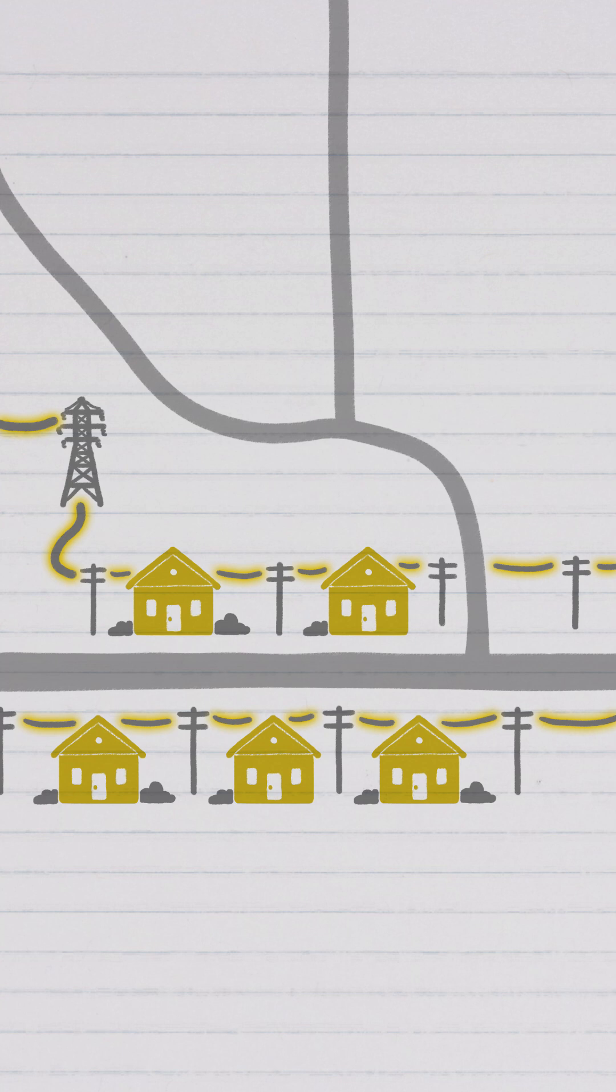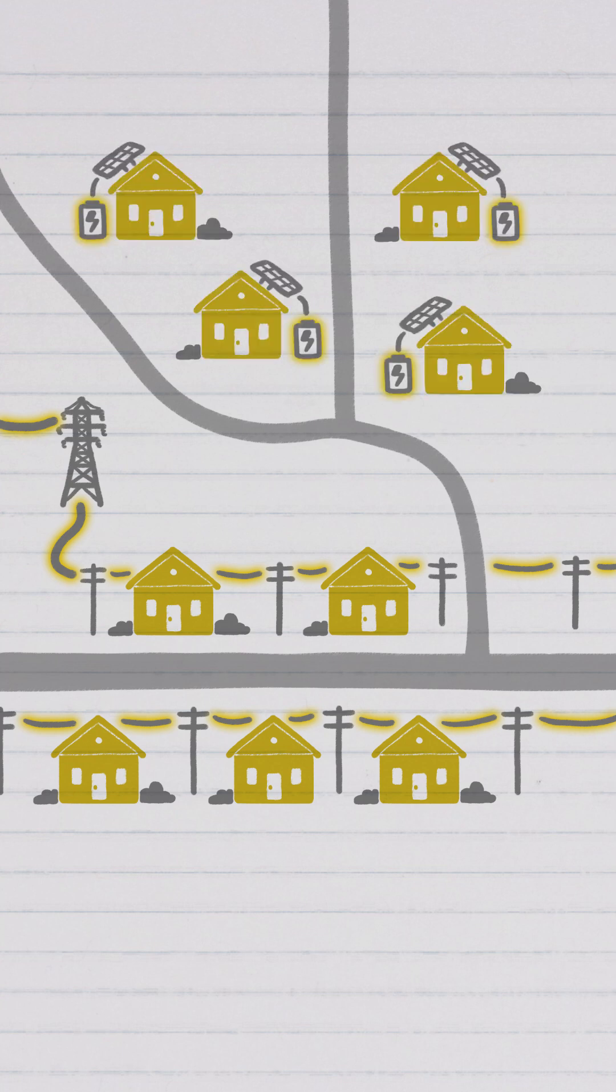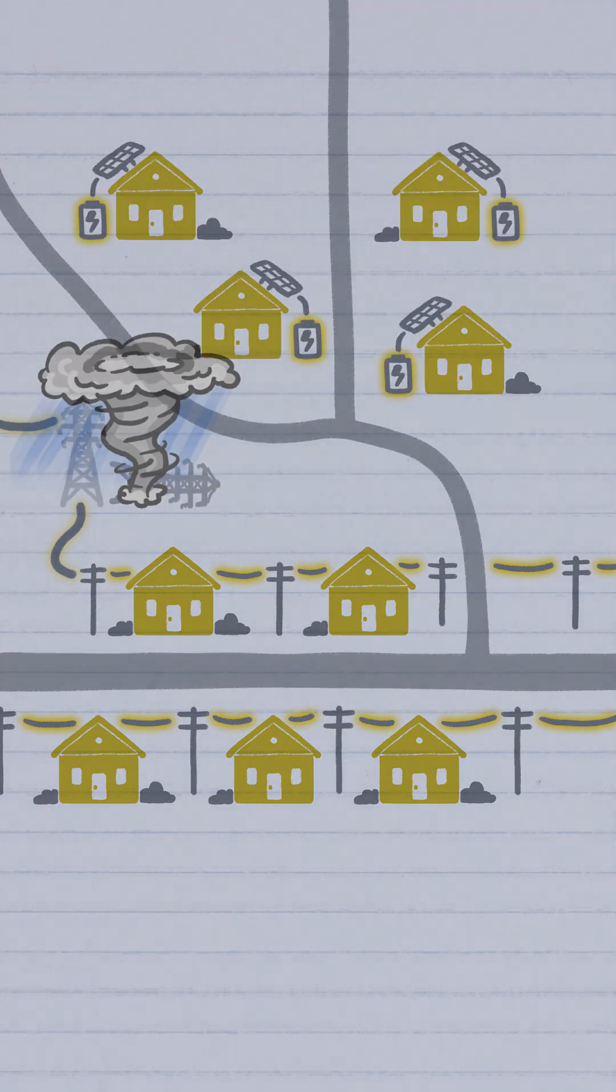Decentralization has already shown some promise. A solar and battery storage-powered community in Florida never lost power during Hurricane Idalia earlier this year, despite outages in surrounding communities. Now that's a gritty solution.